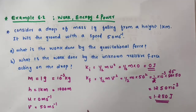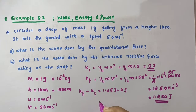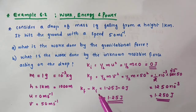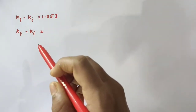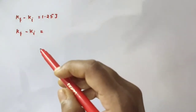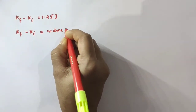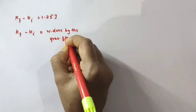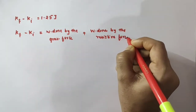The change in kinetic energy equals final kinetic energy minus initial kinetic energy, which is 1.25 Joules minus 0 Joules, giving a change in kinetic energy of 1.25 Joules. According to the work-energy theorem, the change in kinetic energy of a body equals the work done on it by the net force. Here we have work done by the gravitational force plus work done by the resistive force. So: change in KE equals W_G plus W_R.